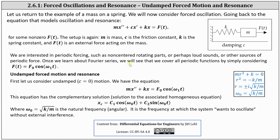Once we learn about Fourier series, we will see that we can cover all periodic functions by simply considering F(t) = F₀ cos(ω₁t). Because we're considering undamped forced motion, the damping constant c is equal to zero, giving us the simplified differential equation: mx'' + kx = F₀ cos(ω₁t).